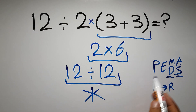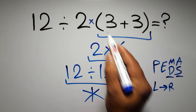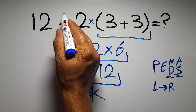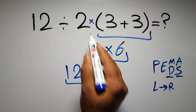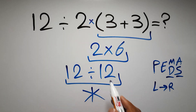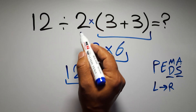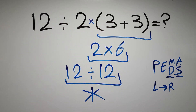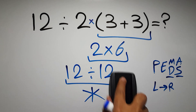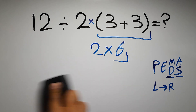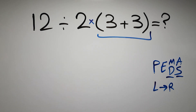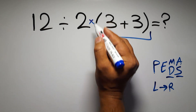So according to PEMDAS, first we have to do these parentheses, then this division, and finally this multiplication. If we do this multiplication before this division, it is wrong.